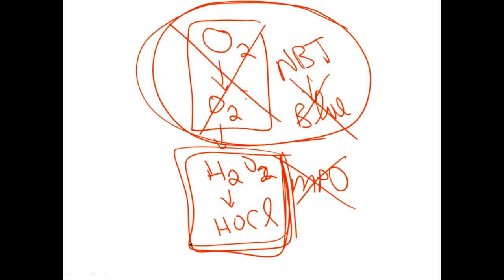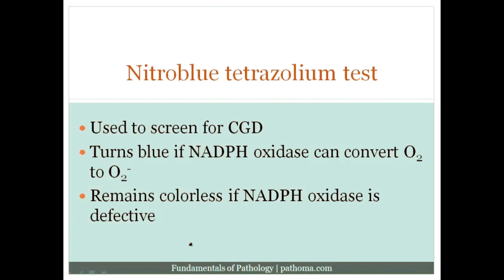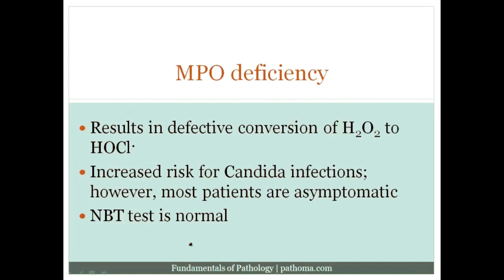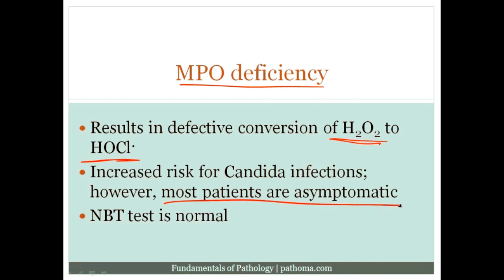MPO deficiency results in defective conversion of H2O2 to HOCl. Most patients are asymptomatic; however, if there is a problem, it's usually an increased risk for Candida infections. High yield: the NBT test is normal in MPO deficiency. It's important to be familiar with myeloperoxidase deficiency.